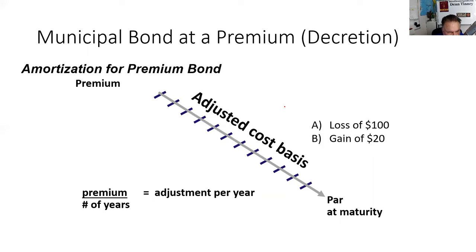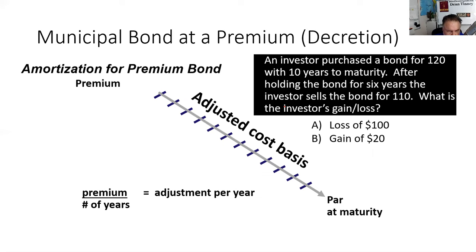Decreation: straight-line amortization downward for muni bonds purchased at a premium. The IRS doesn't let you take a loss in one fell swoop when convenient. If you buy a block of 100 bonds at 120 — $1,200 — it must have a much higher coupon than today's munis, that's why it's trading at a premium. The IRS requires straight-line amortization downward called decreation.